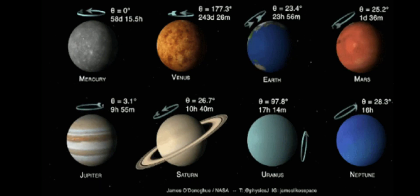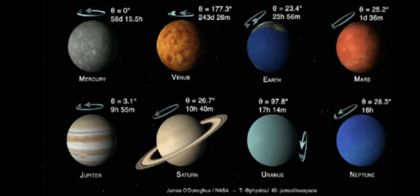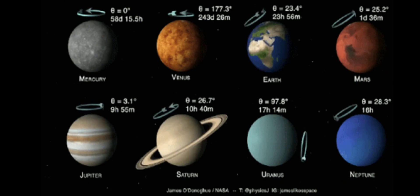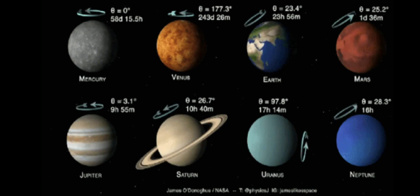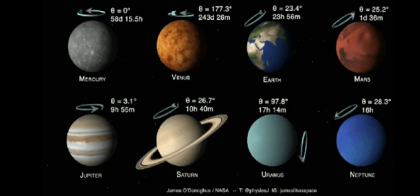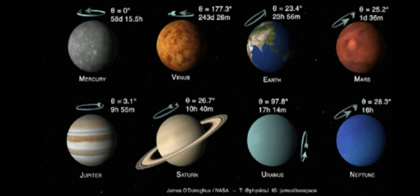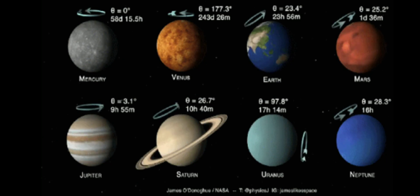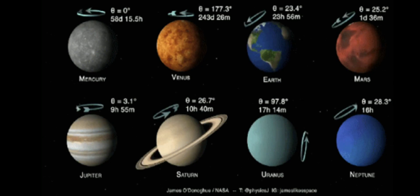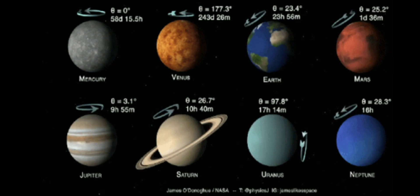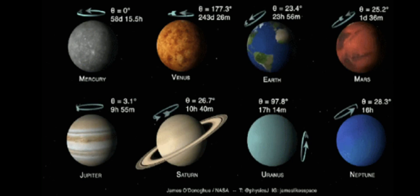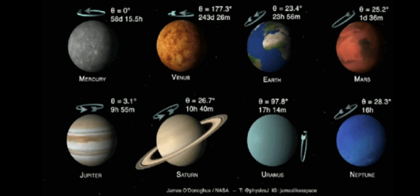Now let's look at the rotation angles of the planets. As we learned, Uranus is the only planet which rotates at a 90-degree angle. You can see all other planets rotate at various angles diagonally, but Uranus is the only planet rotating at exactly 90 degrees.